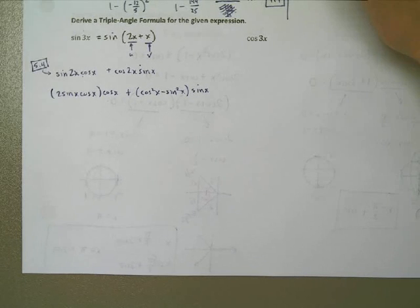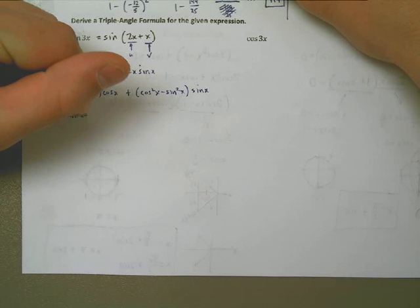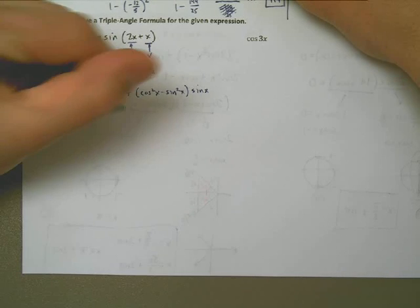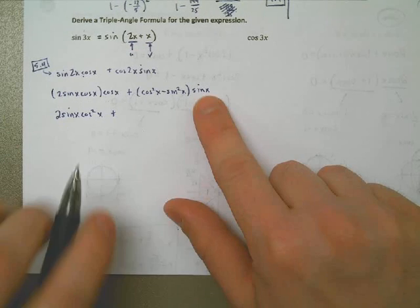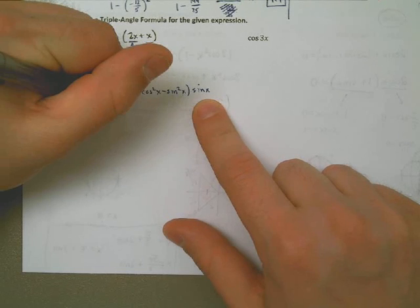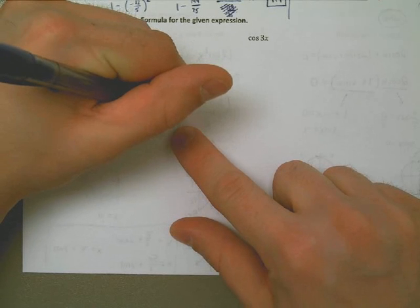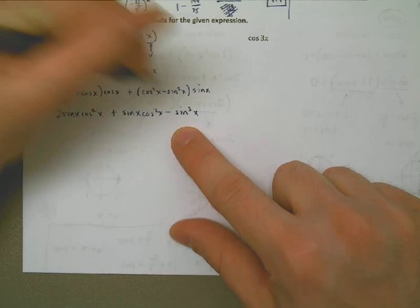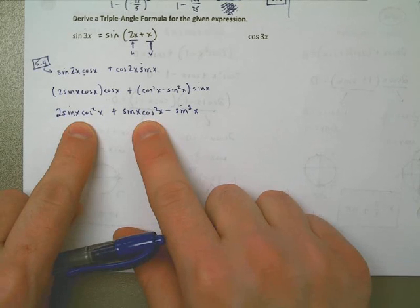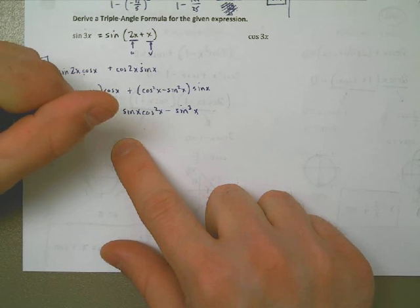This would be 2 sine of x times cosine squared of x, because I've got cosine times cosine right here. Then I need to distribute the sine x to both terms: that gives plus sine of x times cosine squared of x, minus sine cubed of x. Notice these are both sine of x times cosine squared of x, so I take two of these and add one more — I end up with 3 sine of x times cosine squared of x, minus sine cubed of x.